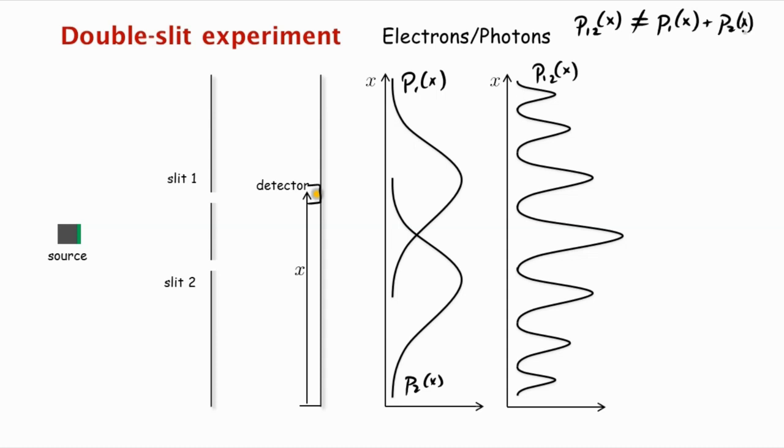And of course, our mystery is how could it be that this packet, this discrete packet went through either slit one or slit two and the probabilities did not add up. So the mathematics behind this is very simple.